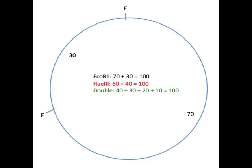As you can see, we've put the EcoR1 cut sites on the circle. And we arbitrarily just started with the 70 kilobase size fragment, clockwise from the first E that is placed at 12 o'clock. And the second fragment is 30 kilobases.